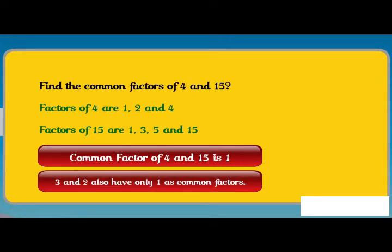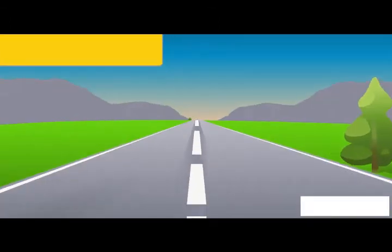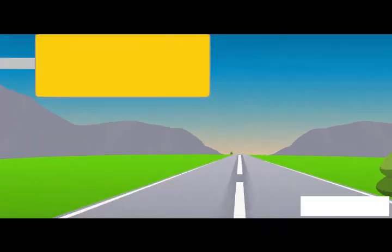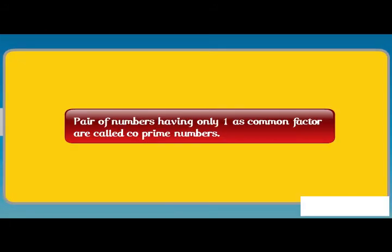Similarly, 3 and 2 also have only 1 as a common factor. All such pairs of numbers having only 1 as a common factor are called co-prime numbers.